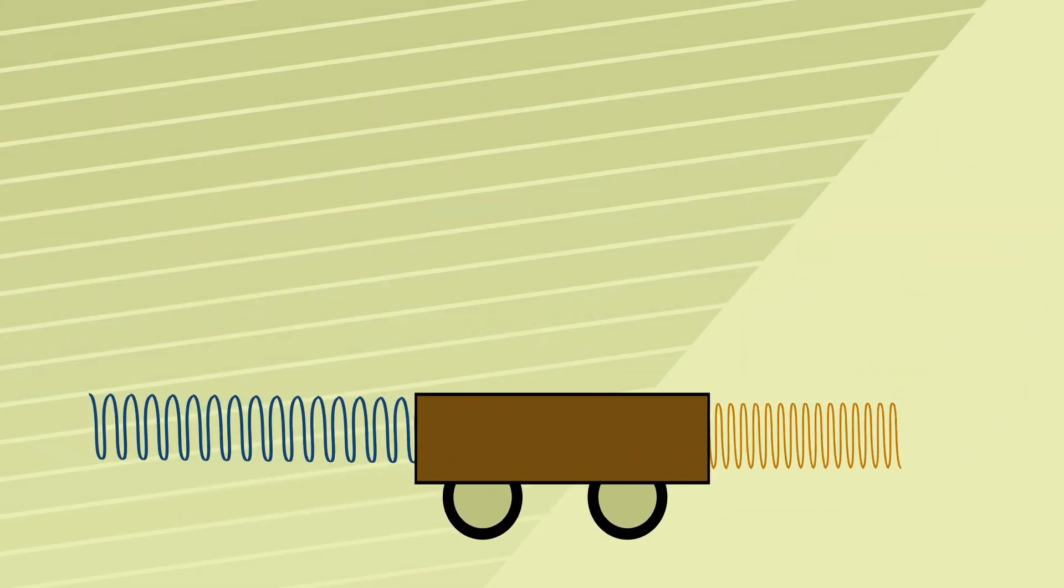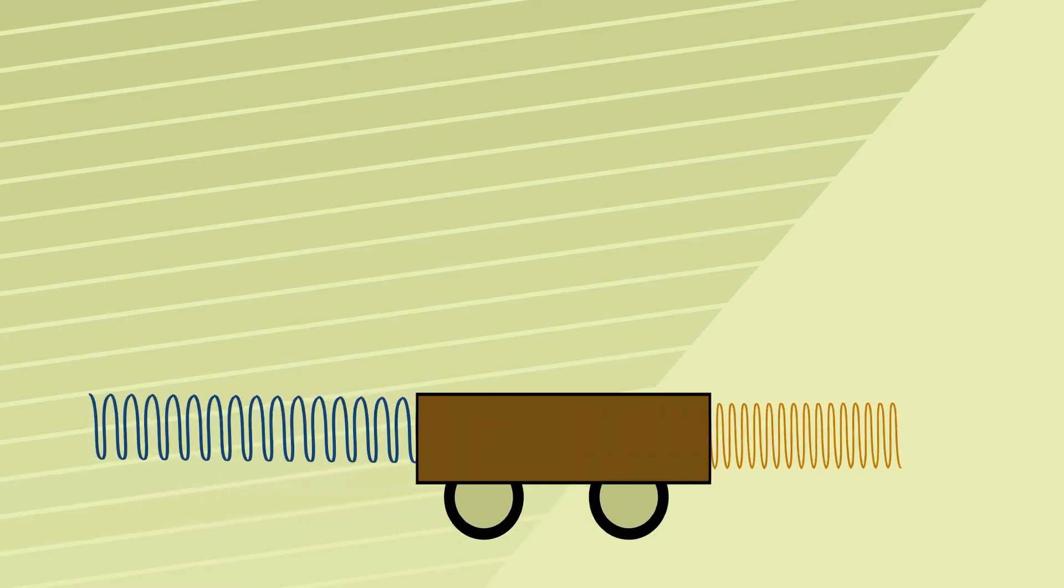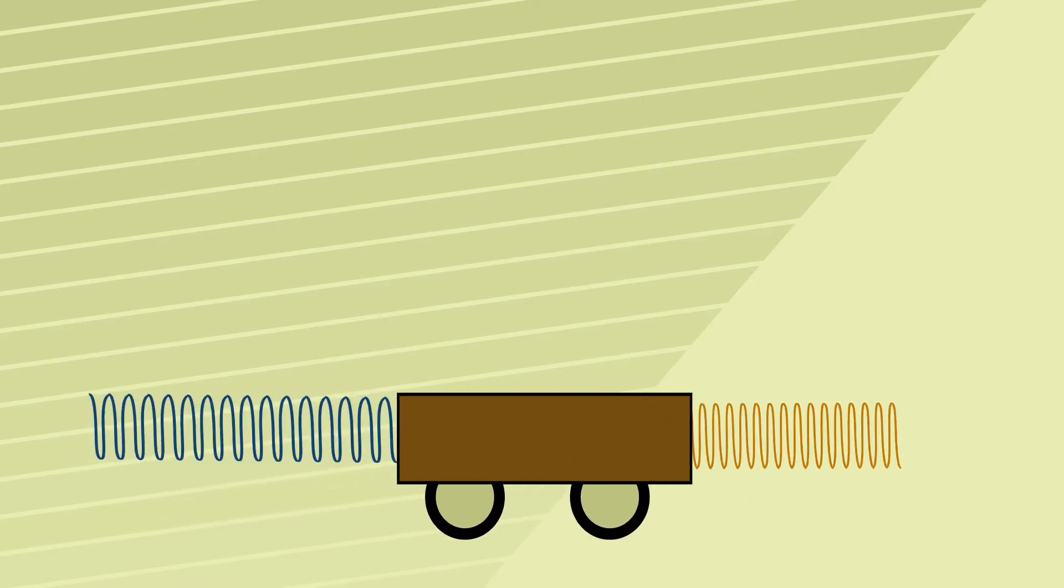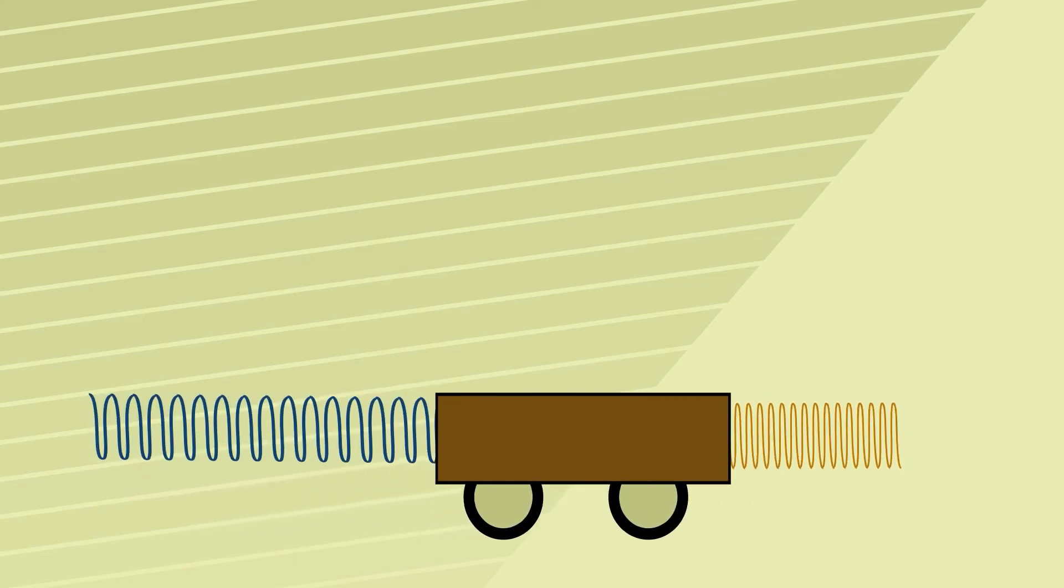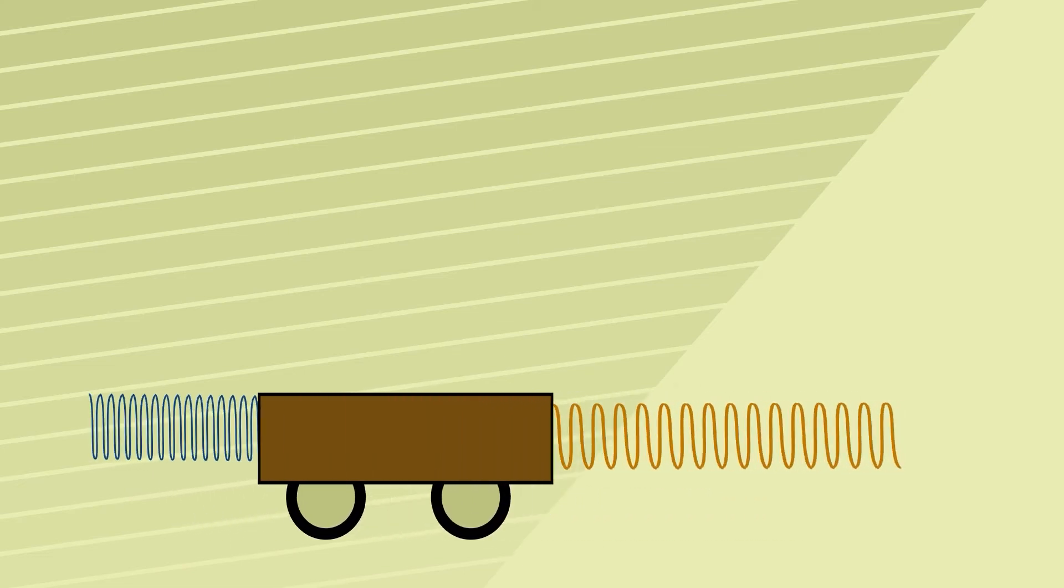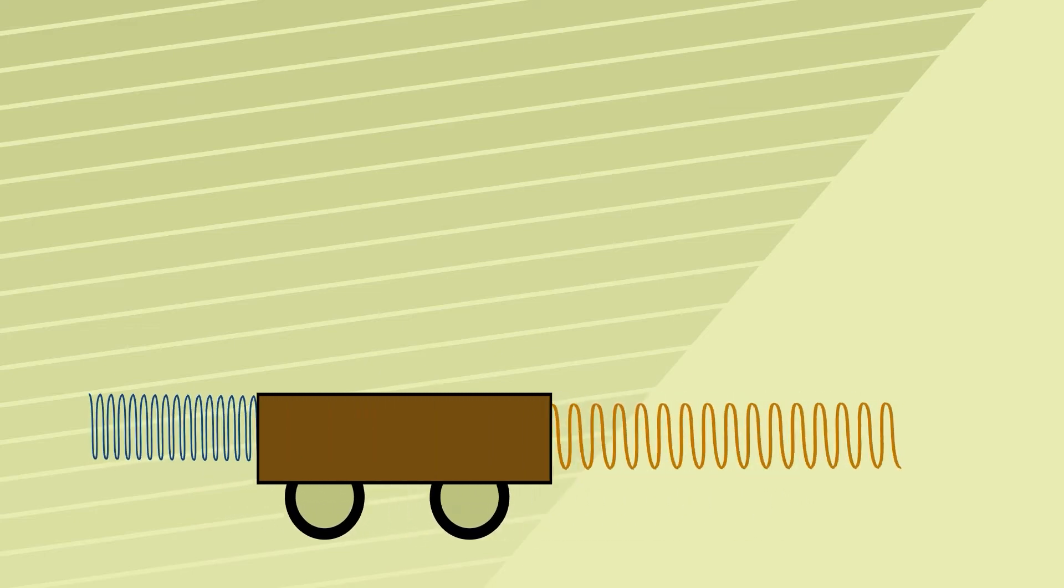This animation shows a trolley suspended between two identical springs oscillating back and forth undergoing simple harmonic motion. As always with physics we're going to ignore anything we can't deal with such as air resistance and friction in the wheels.